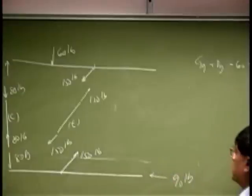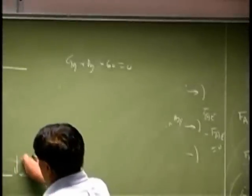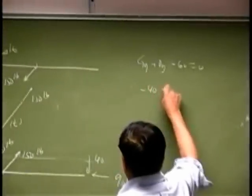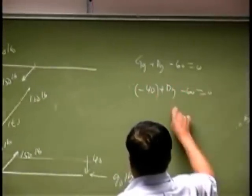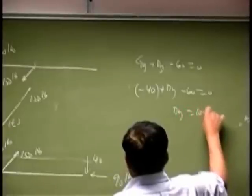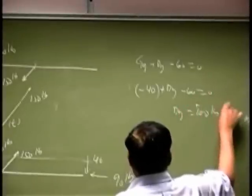See there was an equation which said gy plus dy minus 60 was 0. There was an overall equilibrium, so you know this one came out to be 40 is equal to 40 negative plus dy minus 60 is 0, so dy comes out to be 100 pounds positive goes up.